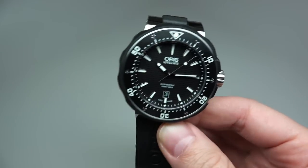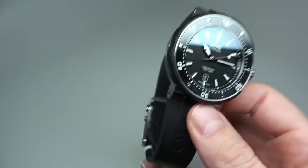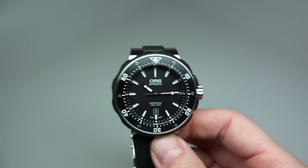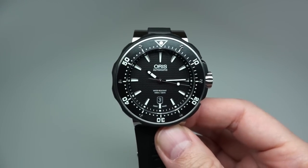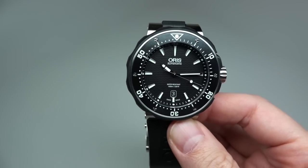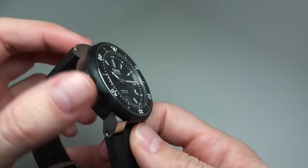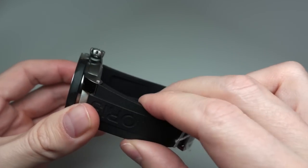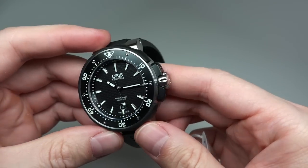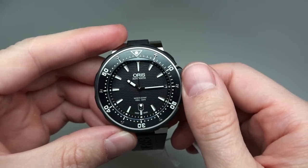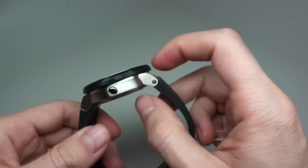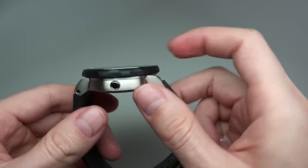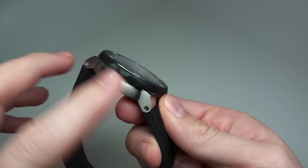It's a series Pro Diver, self-winding movement, automatic movement, and it's a titanium case, rubber band. Size for this model, 49 millimeters without crown, and not so really thin. It's 17 millimeters thickness.